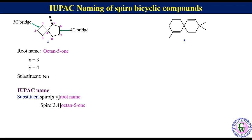Compound 4: in this example both rings are of the same size and both have double bonds at the same position. So the priority of numbering will be decided based on the position of the first substituted carbon. Since the first substituted carbon in the left-side ring is nearer to the spiroatom, it will be numbered first. The left-side ring is numbered 1, 2, 3, 4, 5 and 6. The right-side ring is numbered to give the lower number to the alkenic carbon: 7, 8, 9, 10 and 11.